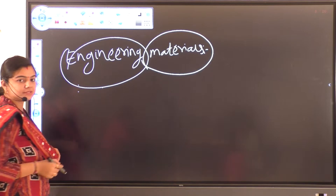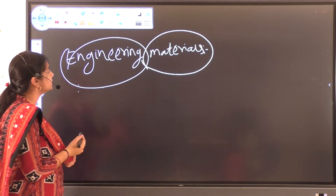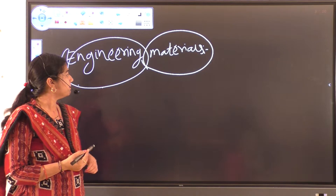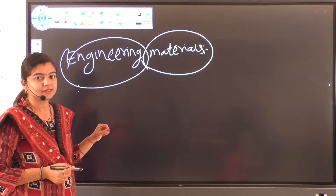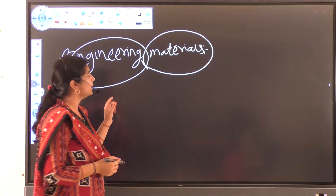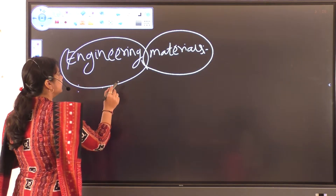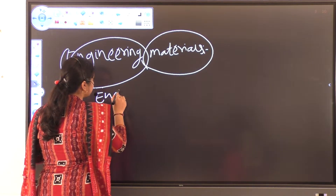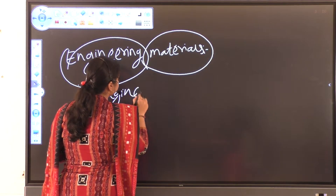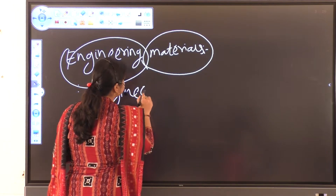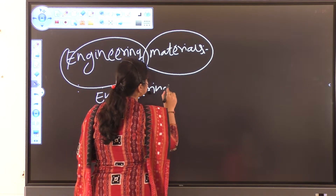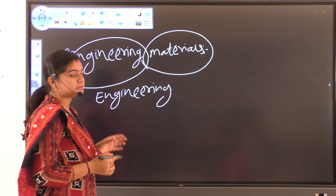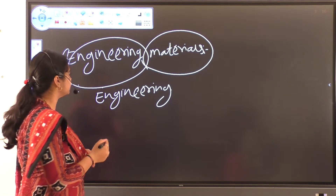First, what is Engineering? Engineering means it is the branch of Science and Technology which is concerned with Machine Design, Building, and other things. Then the Materials — what is Materials? Materials means that which things are made from is known as Materials.